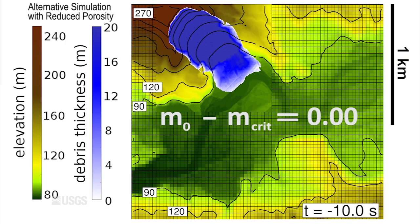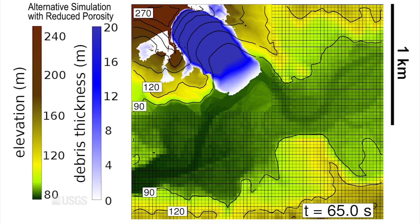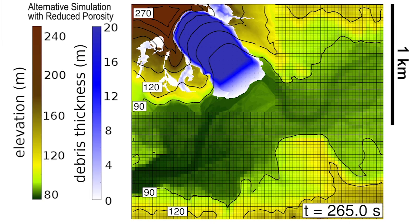If the values of m0 and mcrit are equal, as they are in this simulation, then porosity reduction does not occur during landsliding. As a consequence, pore water pressures do not increase and landslide friction remains high.